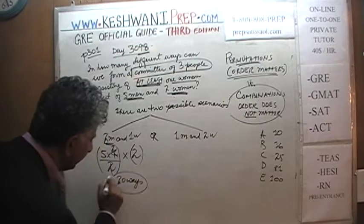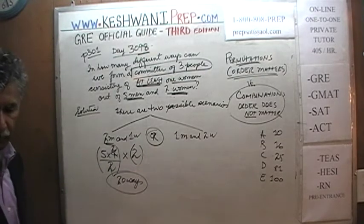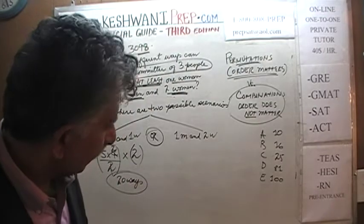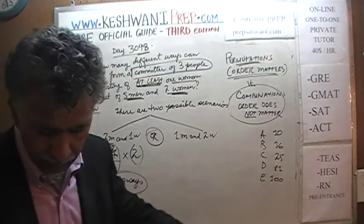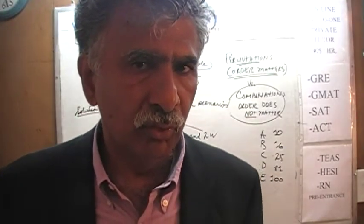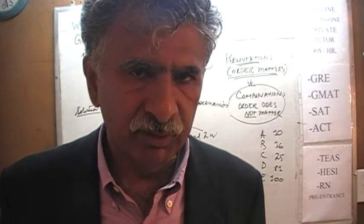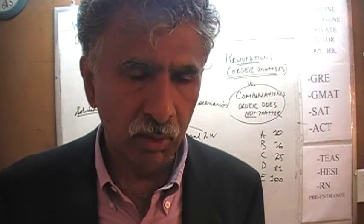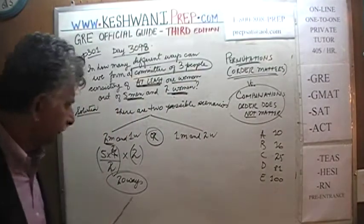There are 20 ways we can have our committee where we have one woman. I forgot to give you the answer choices — here they are: 10, 16, 25, 81, and 100. Something you should always do on your own instinctively — once I finish reading the problem, pause the video immediately, solve the problem yourself first, then compare your work against ours. You will get more out of it that way. Anyway, 20 ways so far.